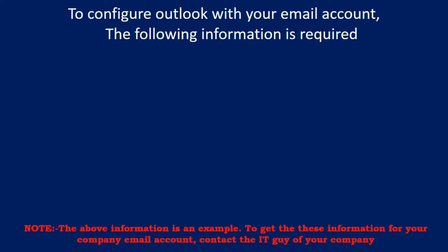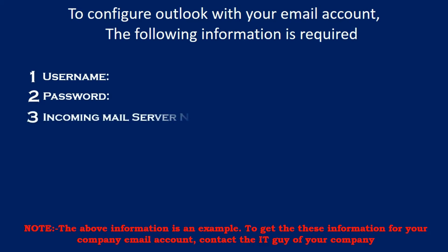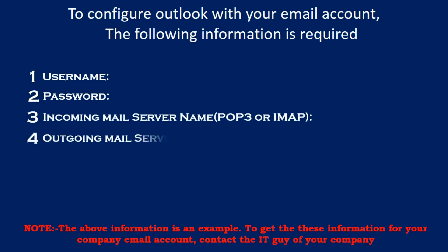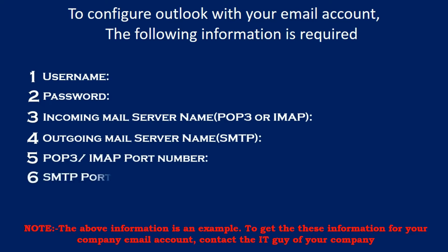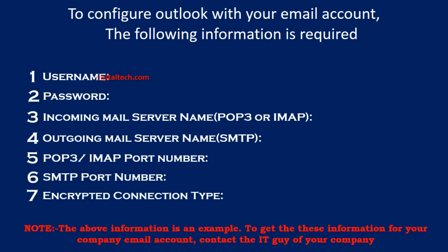To configure Outlook with your email account, the following information is required: username, password, incoming mail server name (POP3 or IMAP), outgoing mail server name (SMTP), POP3 or IMAP port number, SMTP port number, and encrypted connection type.